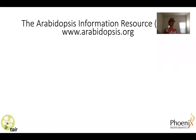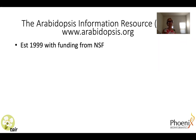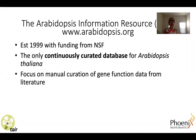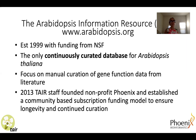TAIR is the Arabidopsis Information Resource and it was established in 1999 with funding from the National Science Foundation, so we've been around for about 20 years. It is the only continuously curated database for Arabidopsis thaliana. Our focus has been on manual curation of gene function from the literature. Around 2013, members of the TAIR staff founded the non-profit Phoenix Bioinformatics and established a community-based subscription funding model to ensure the longevity of the database and continued curation of the Arabidopsis genome, in response to the end of funding from the National Science Foundation.